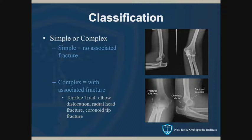Dislocations can be simple or complex — simple meaning no associated fracture, and complex meaning there is also a fracture with the dislocation. This picture is an example of what's called a terrible triad, which is a combination of three injuries: the elbow dislocation, a radial head fracture, and a coronoid tip fracture — this triangular piece of bone that came off its fracture bed.